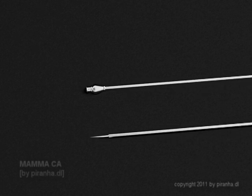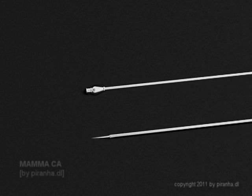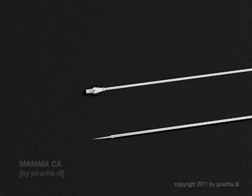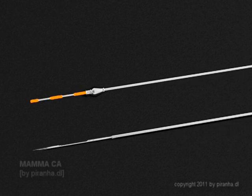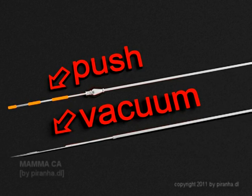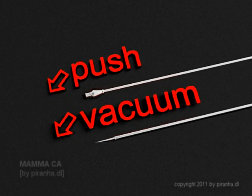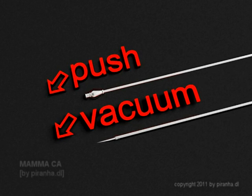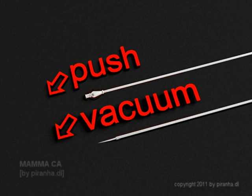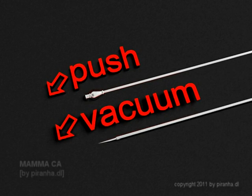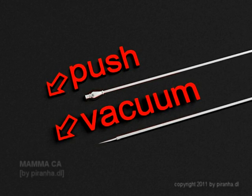Under local anesthesia, the patient is examined in the prone position on a special table, wherein the respective breast hangs freely through a hole in the table, and in the desired plane perpendicular to the chest wall is compressed.